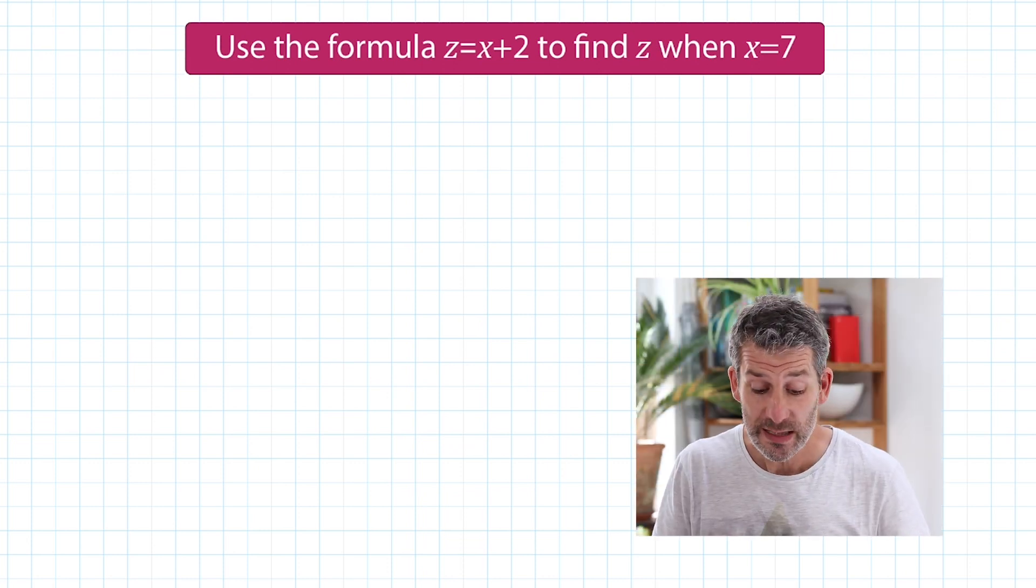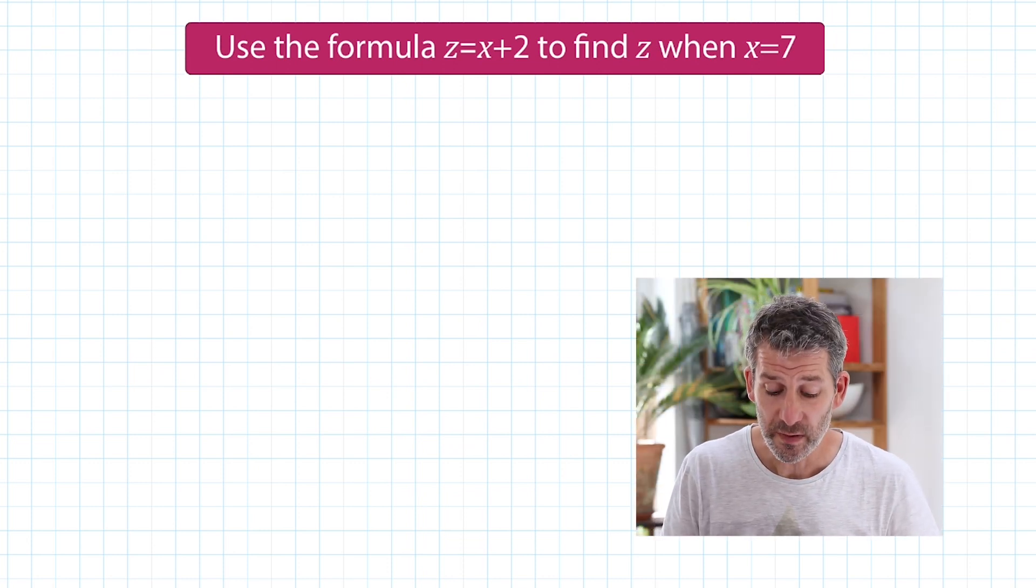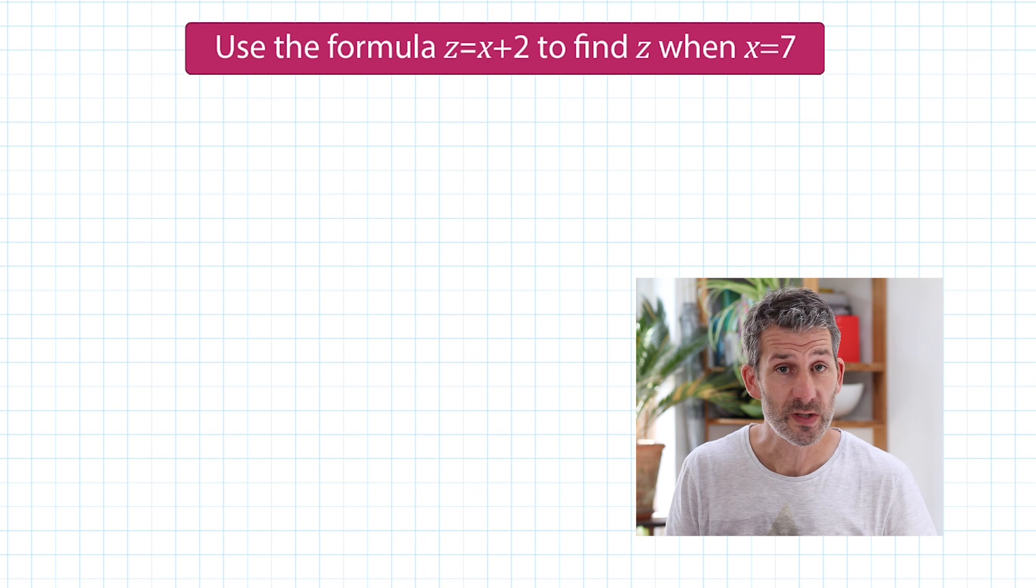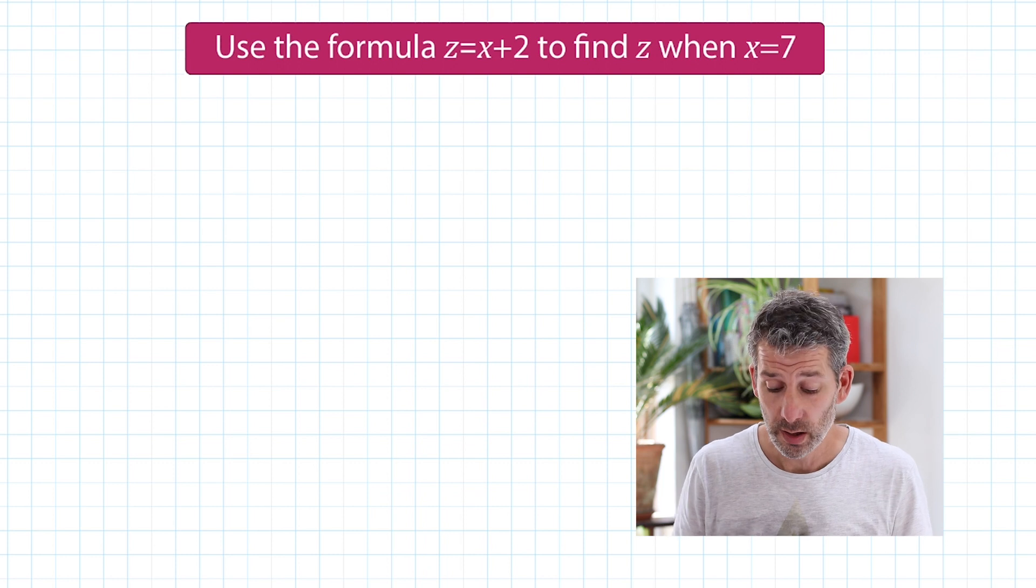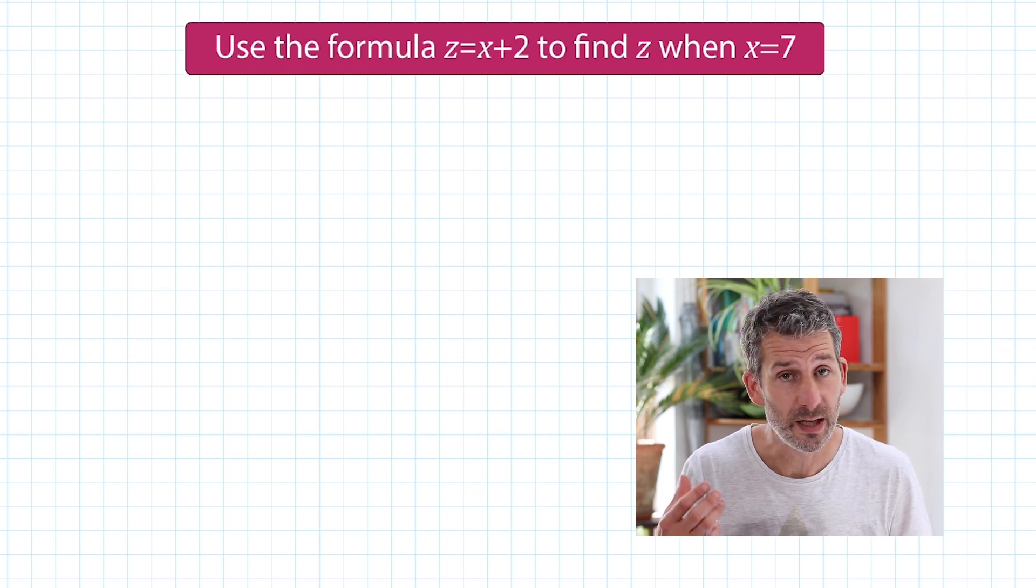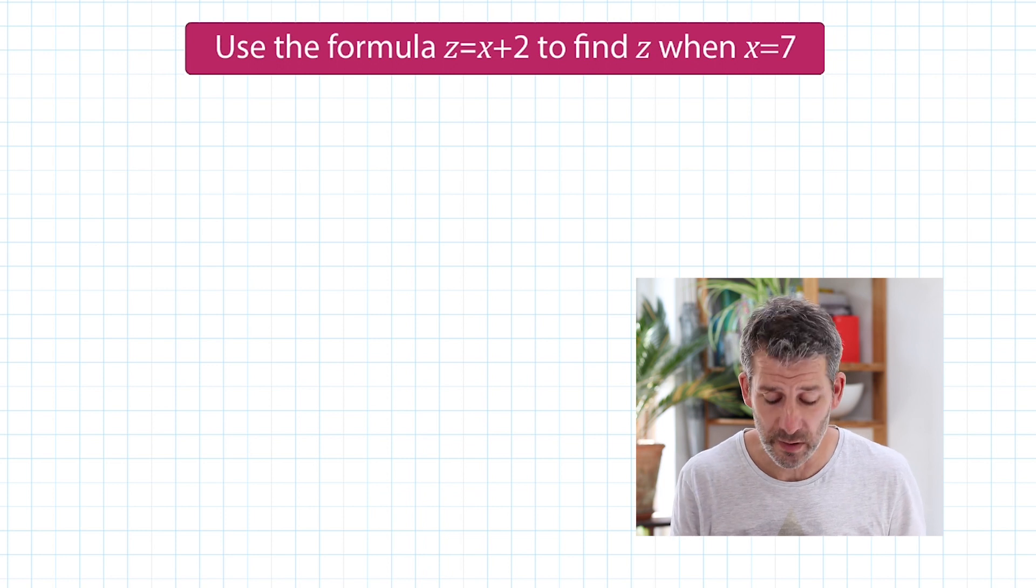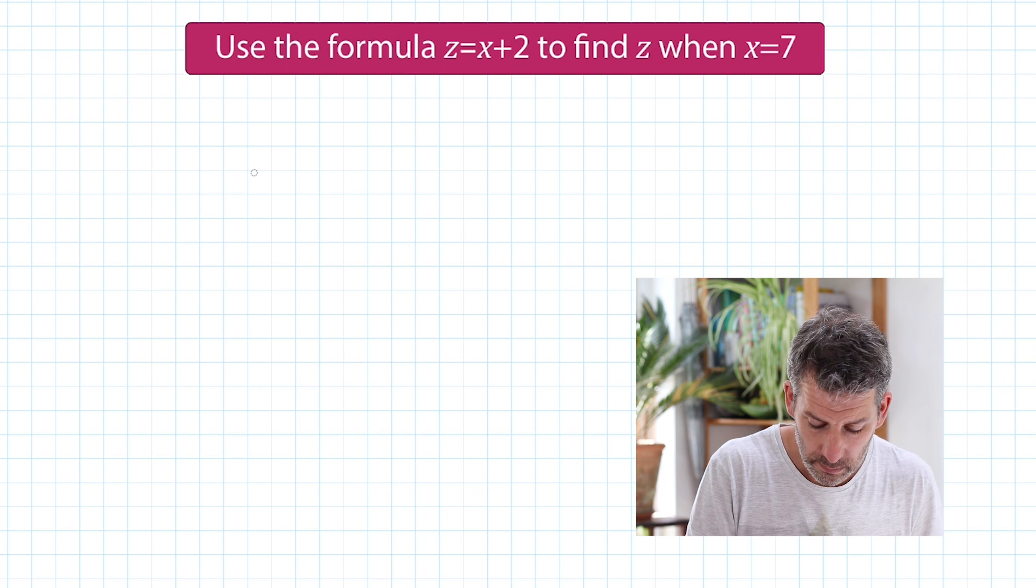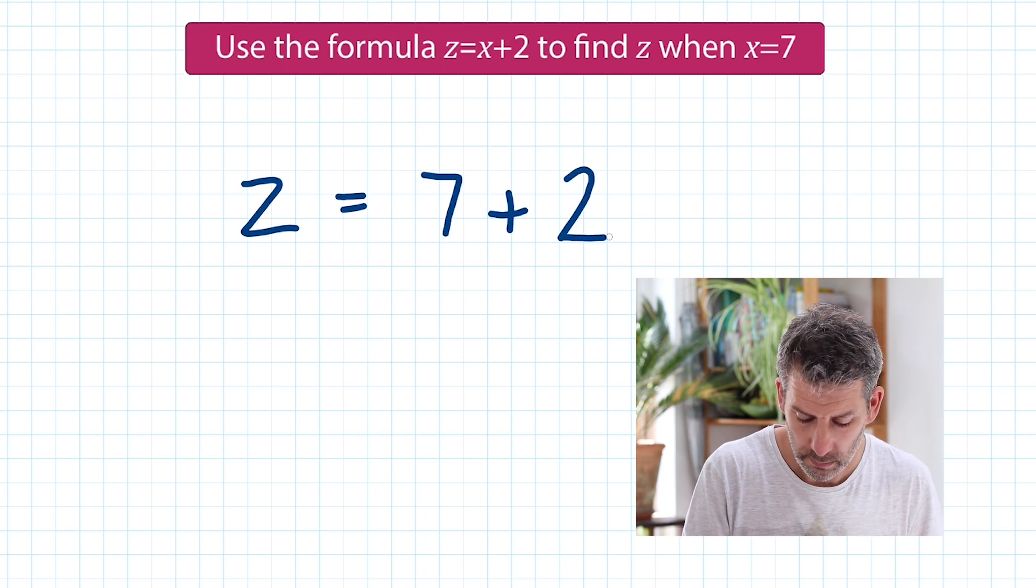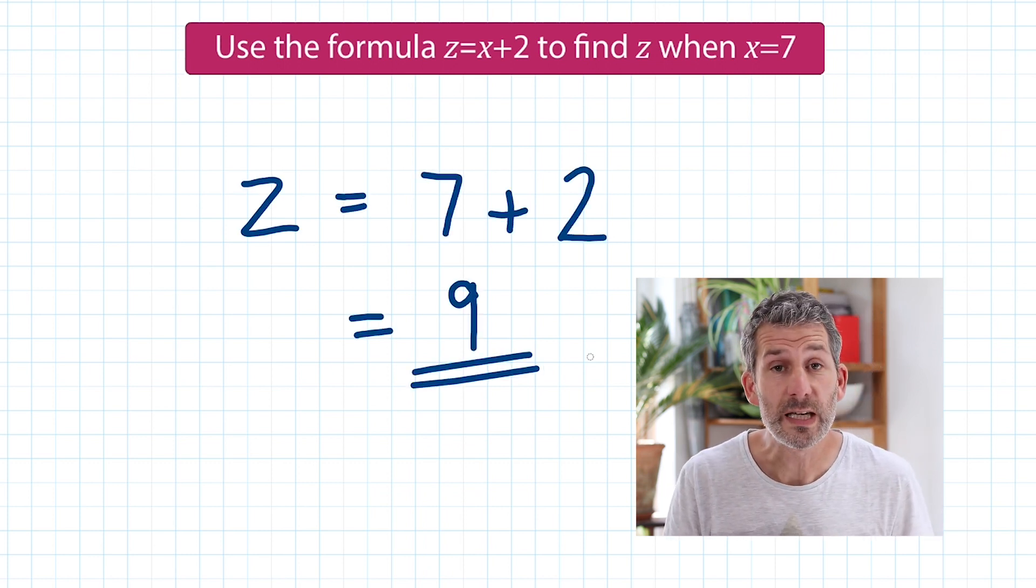Use the formula Z equals X add 2 to find Z when X equals 7. So all we're being asked to do is replace the X in the formula with 7 because it's telling us that X is equal to 7. We now have a numerical value for X. That's what we have to do, so we'll just rewrite it with the number. So Z is equal to 9.